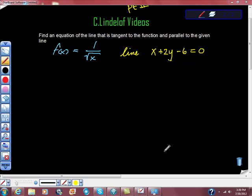Okay, AP Calculus AB. This is part two in this series. Find the equation of a line that is tangent to the function and parallel to the given line.